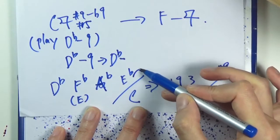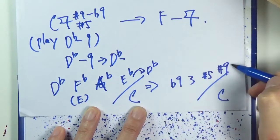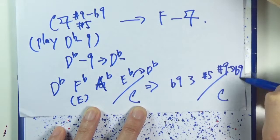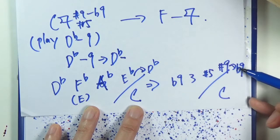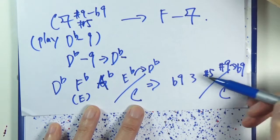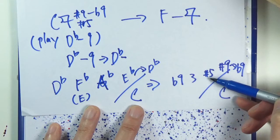Hopefully things are not too messy here. So flat nine, third, sharp five, sharp nine. So A-flat is actually just sharp five and sharp nine.